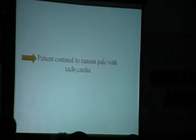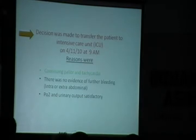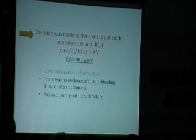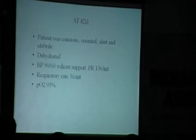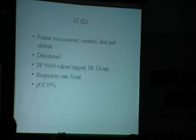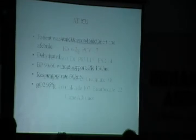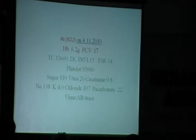The patient continued to remain pale. We observed her through the night, and by morning we felt we could not manage her any further without an ICU. So we transferred her to the intensive care unit at another hospital. At the ICU, she was conscious, oriented, and alert but dehydrated. BP was 90/60 without vasopressor support, respiratory rate was 36 per minute, and oxygen saturation was 90%. Next day, hemoglobin was 6.2 grams.